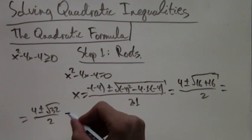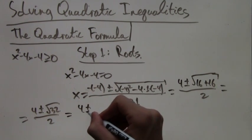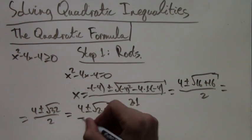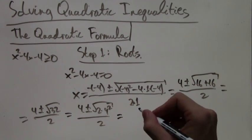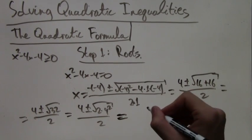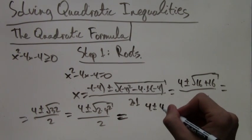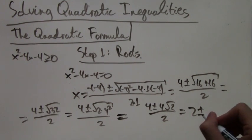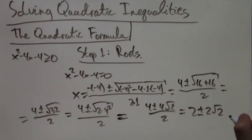Which is also equal to 4 plus or minus the root of 2 times 4 squared, and this is so that we can simplify the square root. That simplifies to 4 plus or minus 4 root 2, all over 2, which in turn becomes 2 plus or minus 2 root 2.